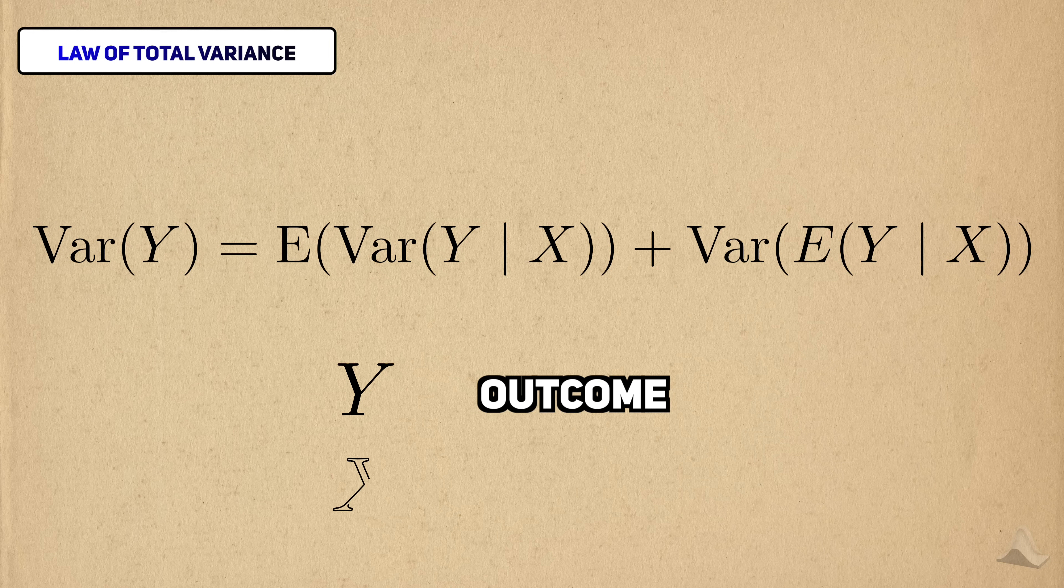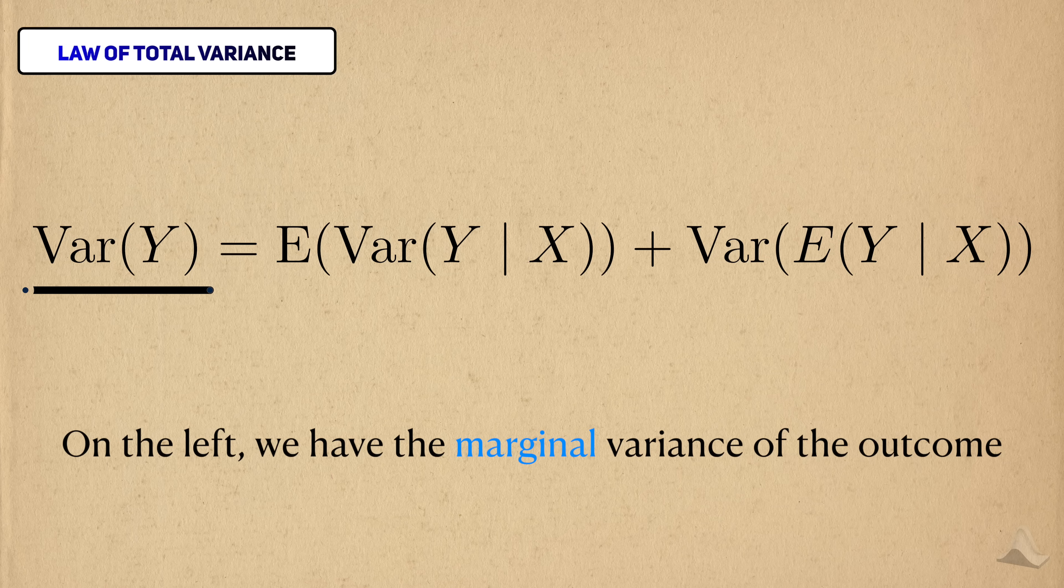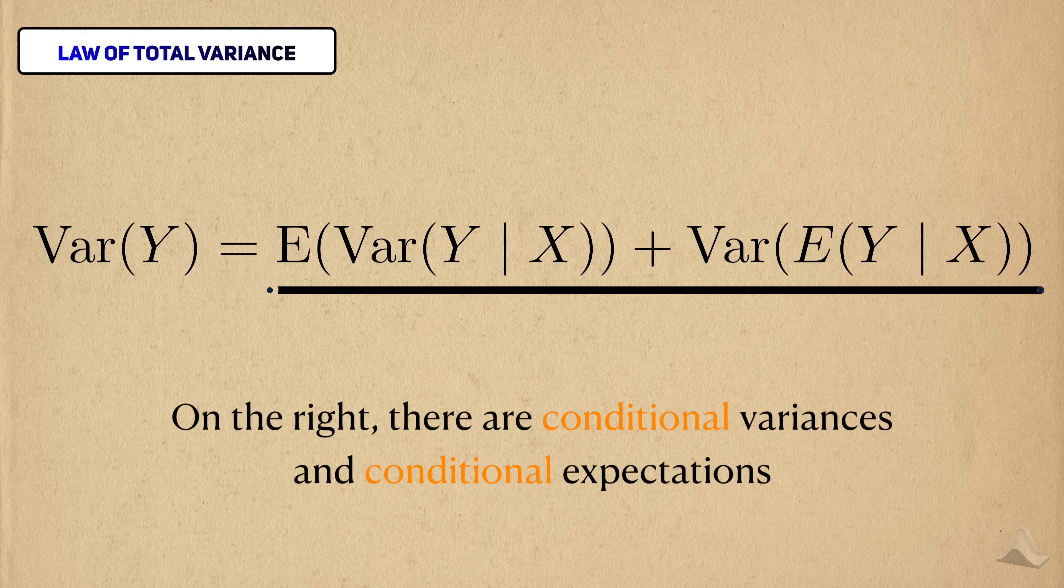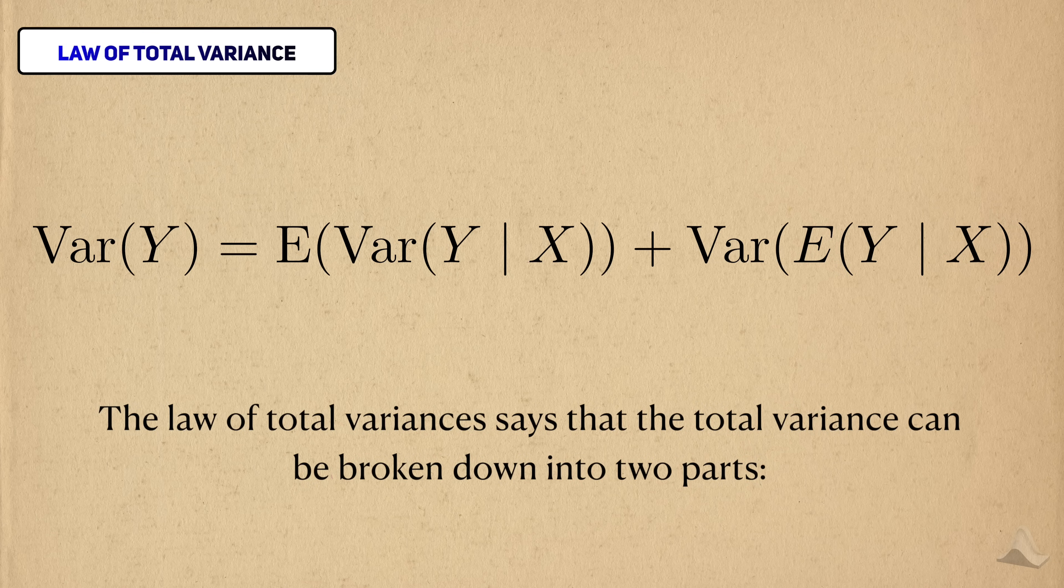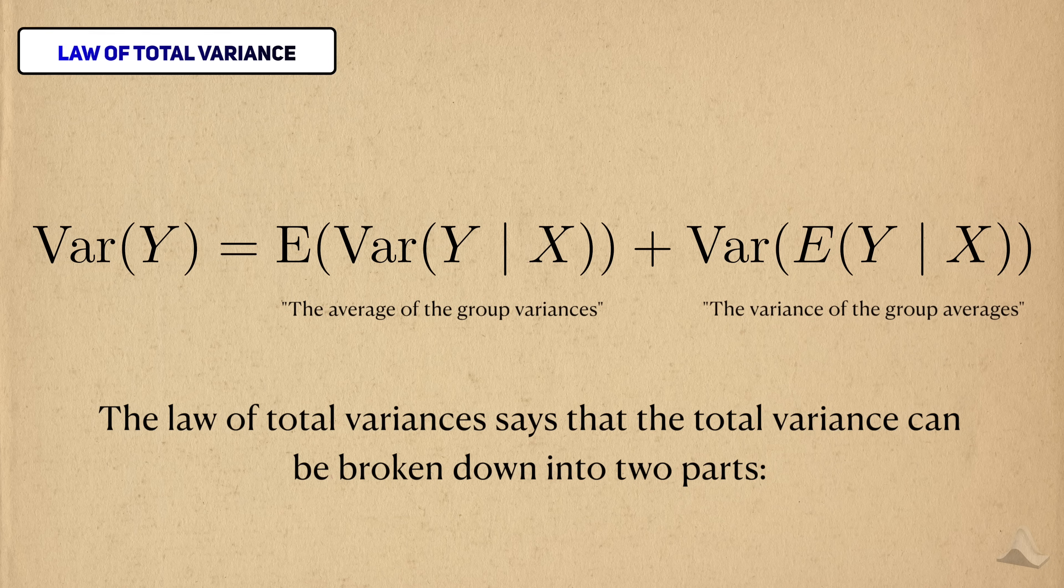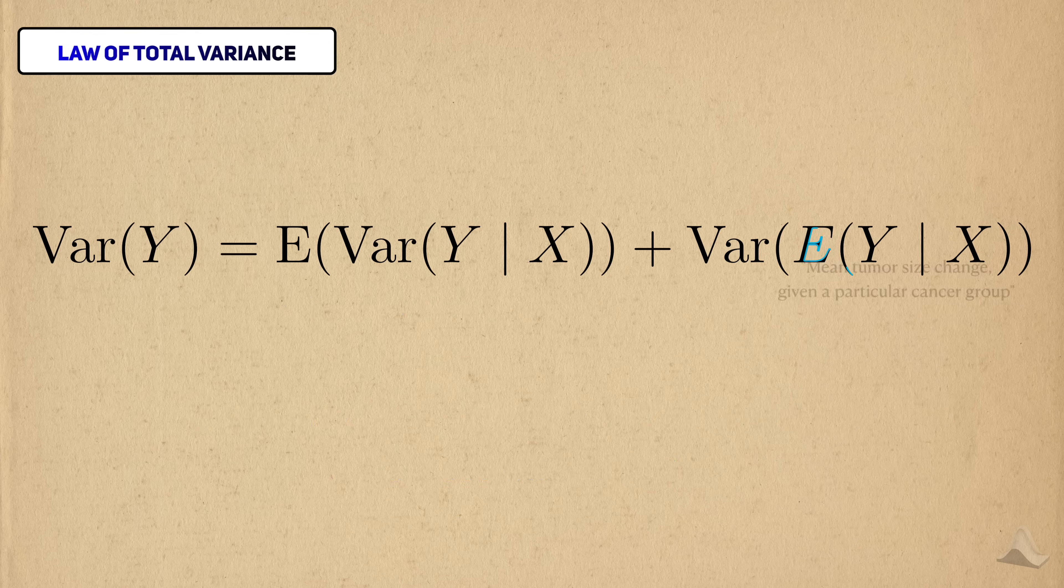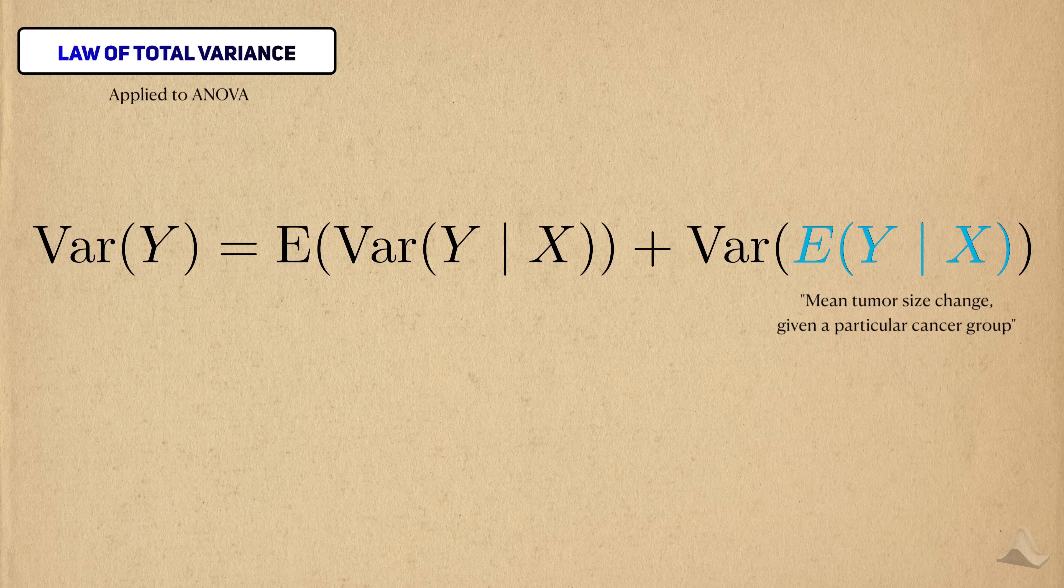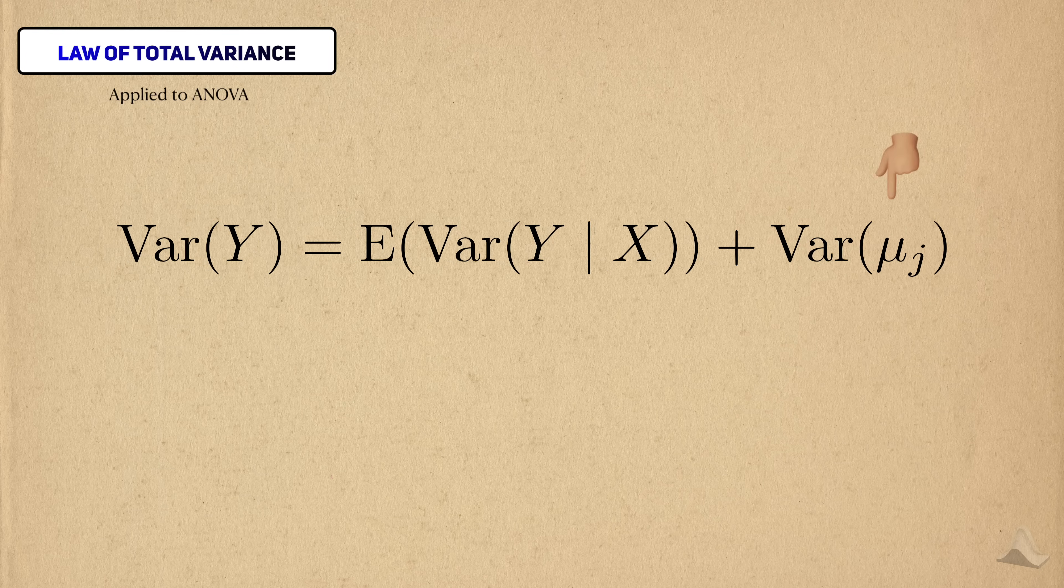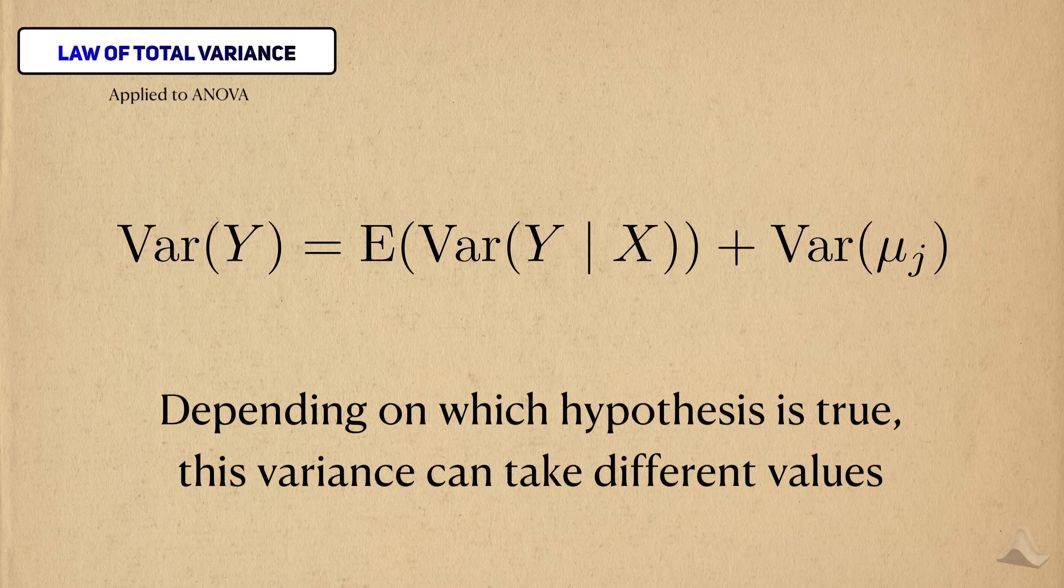The first thing to notice is that on one side, we have the marginal variance of the outcome, but on the other side, we're dealing with both conditional variances and conditional expectations. The law of total variance says that the total variance in the outcome can be broken into two parts, the average of all the group variances and the variance in the group averages. We'll look at both of these terms and apply them to our specific problem. This inner term here represents each of the group means. To make it easier to read, I'll replace this expectation with my notation earlier, these mu's with a group-specific index. Depending on what hypothesis is true, this entire variance term can have a different value, so we'll get back to this in a bit.